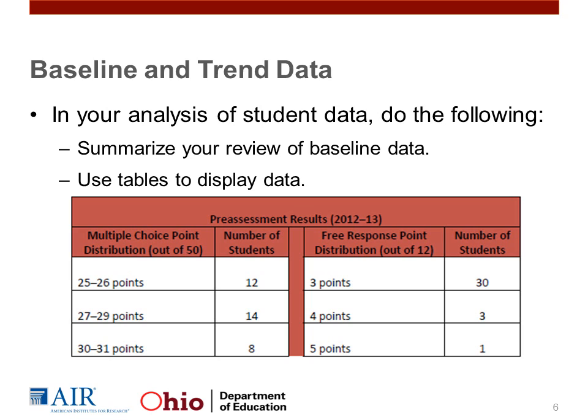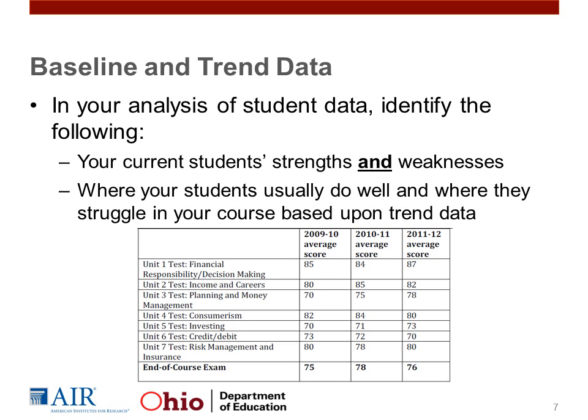Another, perhaps more useful way to organize the data would be by topic or skill area. Summarizing the data in tables can also assist you in establishing growth targets when we reach that section of the SLO template. You will also need to identify your current students' strengths and weaknesses. Keep in mind that if you only identify strengths or only identify weaknesses, your SLO will not be approved, because identification of both is required by the SLO template checklist used in approving SLOs. This is why breaking down information by topic or skill area can be important.